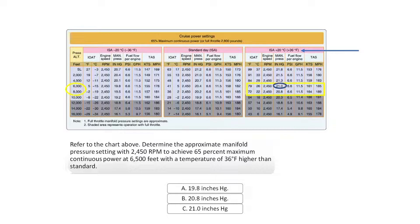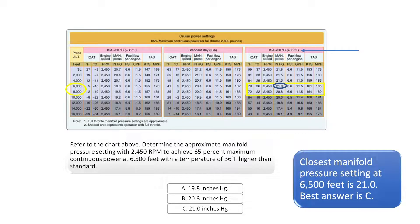For this question, the approximate manifold pressure setting would be 21 inches of mercury, since that is the closest manifold pressure setting for the indicated pressure altitude of 6,500 feet.